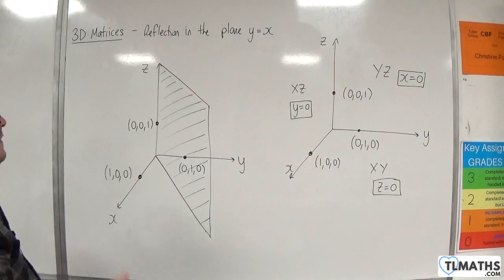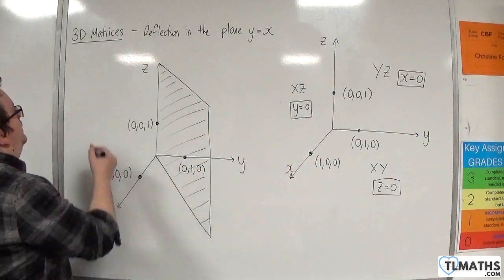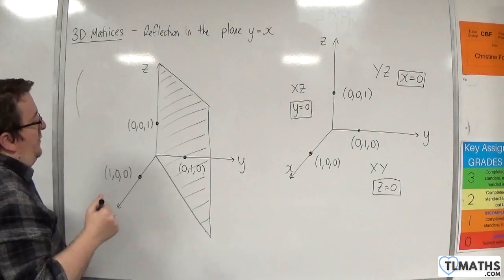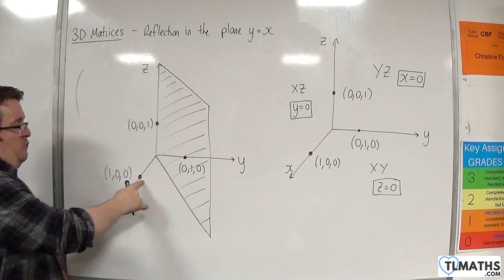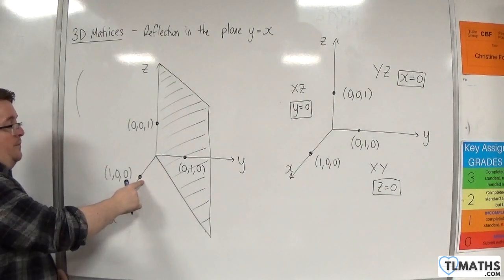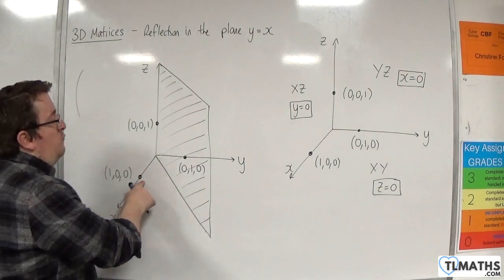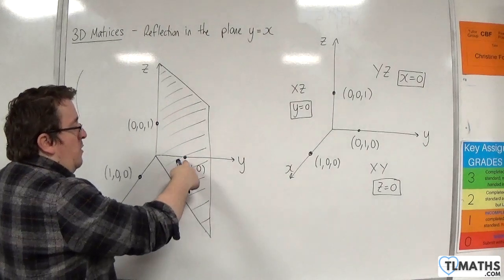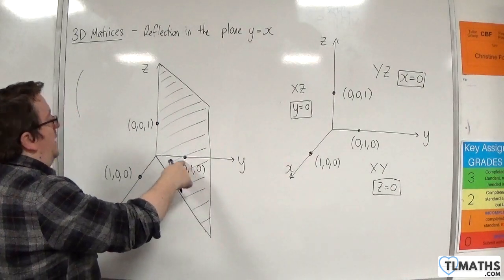So if I wanted to reflect in the plane y equals x, the first thing I would do is think, right, well (1,0,0), where's that going to go? Well that would get reflected into (0,1,0) if that was the case.